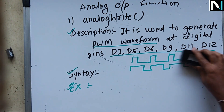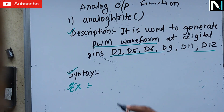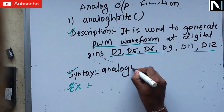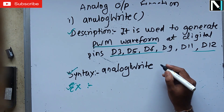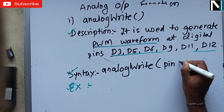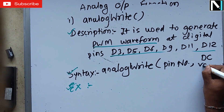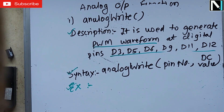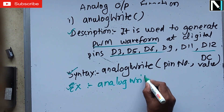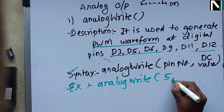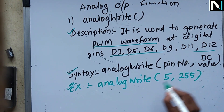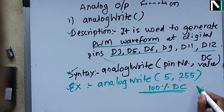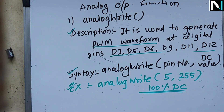The syntax of analogWrite is: analogWrite(pin, value); — note everything is lowercase except 'W' in Write. For example: analogWrite(5, 255); — this generates a PWM waveform on digital pin 5 with a value of 255, which corresponds to a 100% duty cycle.